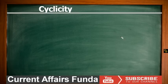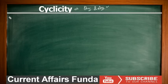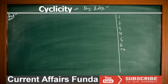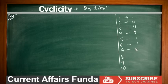Welcome to the section on cyclicity question and answer session. I have discussed how to find the cyclicity of a number, so now I'll discuss the problems. Let me first write down the cyclicity of 1 through 10: cyclicity of 1 is 1, 2 is 4, 3 is 4, 4 is 2, 5 is 1, 6 is 1, 7 is 4, 8 is 4, 9 is 2, and 10 is 1.